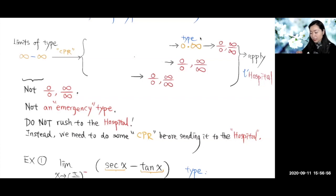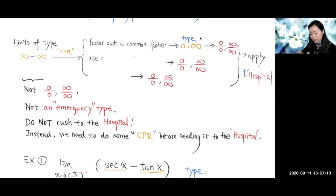Today we're going to go through three different methods. The first one will be to factor out a common factor. The second one will be to use a common denominator, and the third one is to rationalize it.